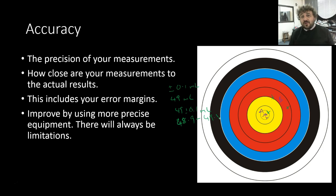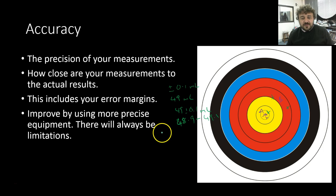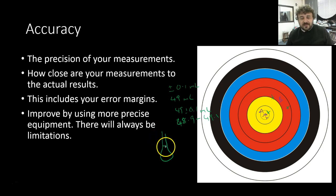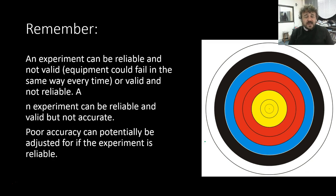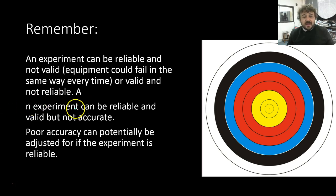You can improve accuracy by using more precise measurements. In chemistry, instead of a measuring cylinder, you might use a volumetric flask — a flask with a calibrated line — which tends to be accurate to 0.01 millilitre, so that's ten times more accurate. Now, remember: an experiment can be reliable and not valid — the equipment can fail at the same point every single time. Or it can be valid and not reliable. And an experiment can be reliable and valid, but not accurate.